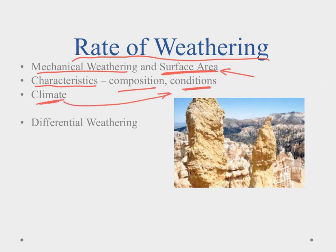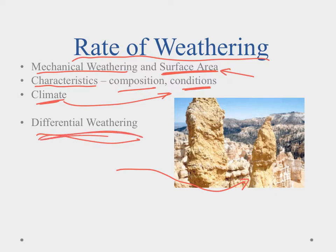Simply put, if something is durable it won't weather as quickly as something brittle or frail. Then we have differential weathering — you can see examples like the chimney columns at Bryce Canyon, where parts of the rock have weathered away faster than others. That's all differential weathering means. That's it for this introductory video — good luck on the lessons.